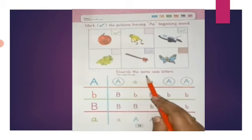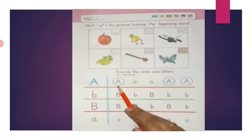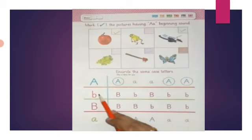So students, our second activity is circle the same case letters. We have to circle the same case letters. A letters. We're going to circle the same case letters. You have to circle the second line.